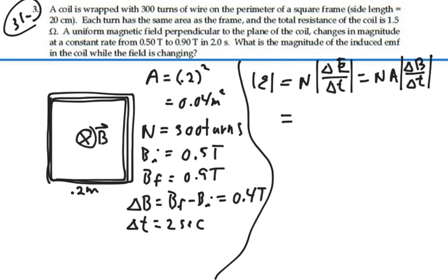That'll be 300 turns times 0.04 meters squared. Our change in magnetic field is 0.4 tesla. And we're going to do that in two seconds.